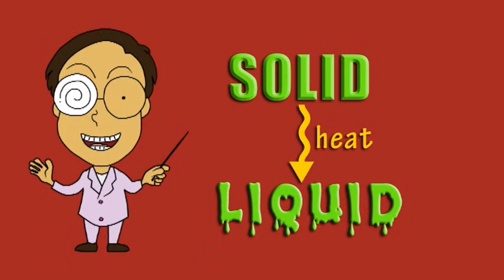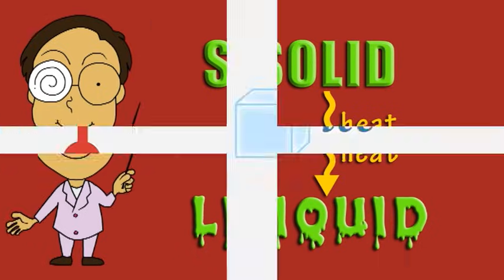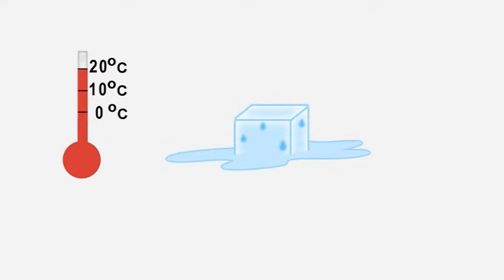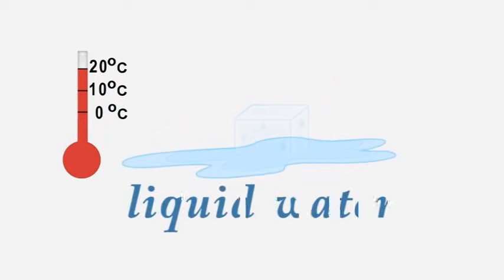Some solids melt and become liquids when they are heated. For example, ice will melt into liquid water if you leave it at room temperature.